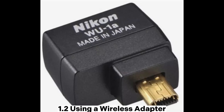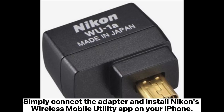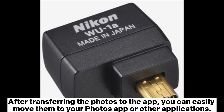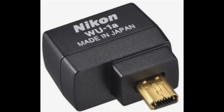1.2 Using a Wireless Adapter. You can use a Nikon WU-1a wireless mobile adapter to transfer photos from your camera to your iPhone. Simply connect the adapter and install Nikon's Wireless Mobile Utility app on your iPhone. After transferring the photos to the app, you can easily move them to your Photos app or other applications, and share photos via email or social media.